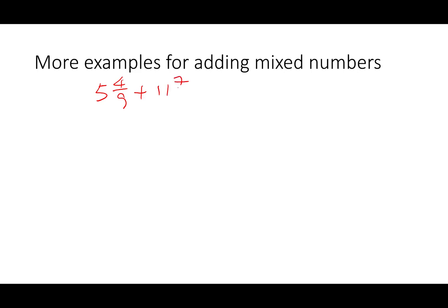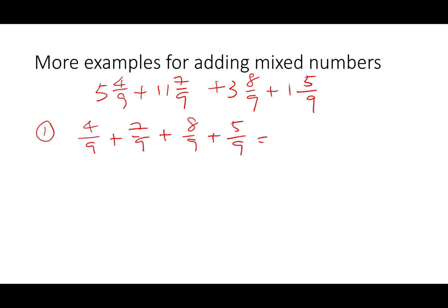What happens if you need to add more than two mixed numbers? For example: five and four-ninths plus eleven and seven-ninths plus three and eight-ninths plus one and five-ninths — four mixed numbers. The same procedure applies. We look at the fractional part first: four-ninths plus seven-ninths plus eight-ninths plus five-ninths gives us twenty-four over nine. Converting this improper fraction to a mixed number gives us two and six-ninths, which can be further reduced to two and two-thirds.